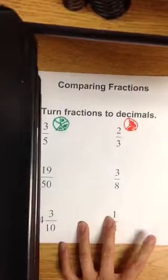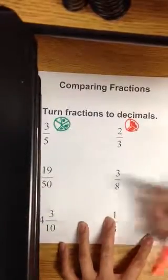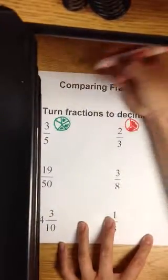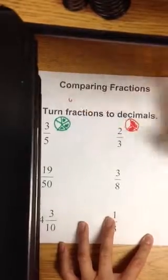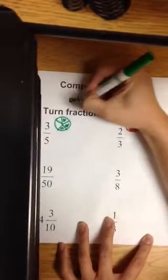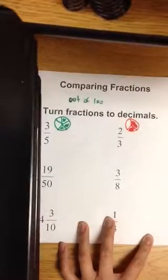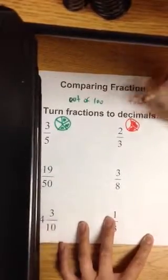So let's turn fractions into its decimal equivalence. Remember we learned there are two ways to do it. It's called out of 100 or the division method.